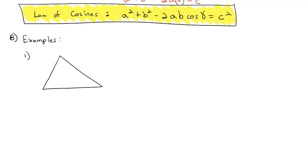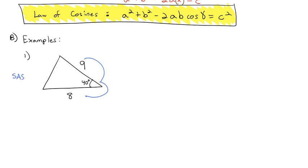Let's say we have a triangle with a 40-degree angle, a right side of 9, and a bottom side of 8. Notice we cannot identify an angle and its opposite side, so we can't use the Law of Sines. What we have is side-angle-side, which is one of the cases where we use the Law of Cosines. Our angle is gamma, the opposite side is C, and 9 and 8 are A and B in any order. Plugging in: 9 squared plus 8 squared minus 2 times 9 times 8 times cosine of 40 equals C squared.